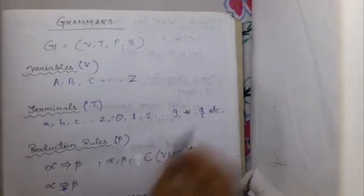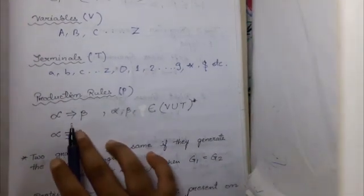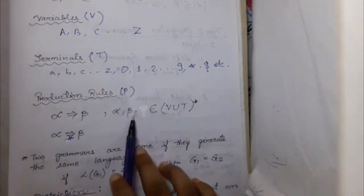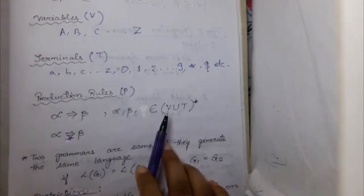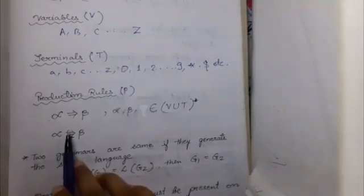P means the production rules. Production rules are represented in the form alpha derives beta, where alpha and beta belong to the union of variables and terminals. When shown as alpha derives beta with a plain arrow, that means alpha directly derives beta. But if there is a star beneath the arrow symbol, that means alpha derives beta in a number of steps.